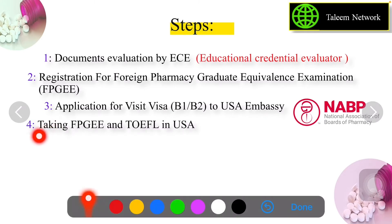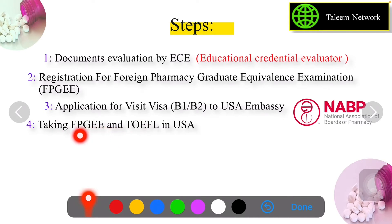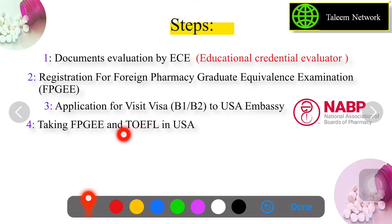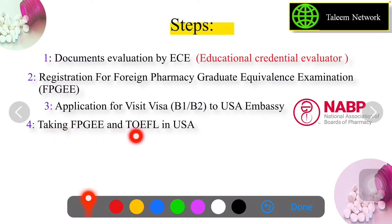In the third step, you apply for your visiting visa. When you arrive in the US, you have to take two exams: the FPGE exam and the TOEFL exam. Both exams are mandatory and connected with each other. You have to pass both in order to get FPGE certification. If you fail in one exam, you will not get your FPGE certificate and cannot proceed to further steps.